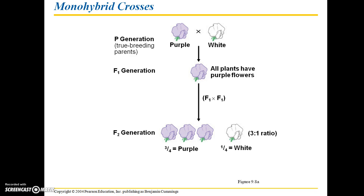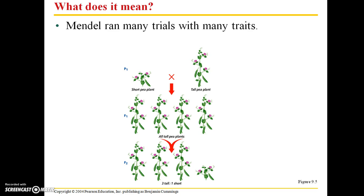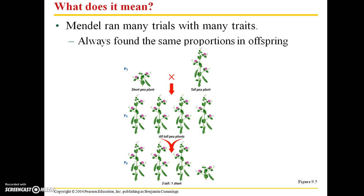Gregor Mendel wondered what could account for these ratios he was seeing in his monohybrid crosses. He ran many trials with many different traits. For example, he crossed a short pea plant with a tall pea plant. In the F1 generation he got all tall, but in the second generation he got three tall to one short on average. He always found these same proportions in the offspring in the F1 and F2 generations.